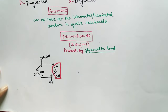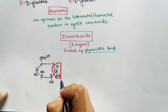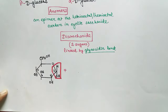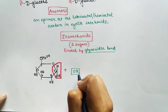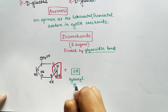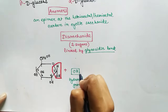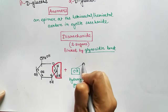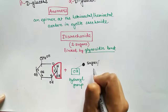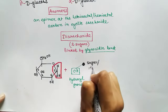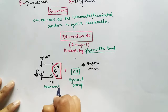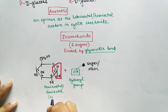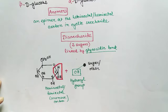A glycosidic bond is a bond between one carbohydrate molecule and some other group. That other group can be another carbohydrate or it can be any other group other than carbohydrate. The glycosidic bond involves the anomeric carbon and the hydroxyl group of the other molecule.